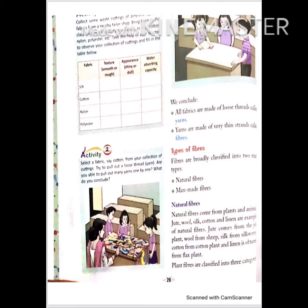Jute comes from the jute plant. Wool is obtained from sheep. Silk comes from the silkworm. Cotton comes from the cotton plant. Linen is obtained from the flax plant.